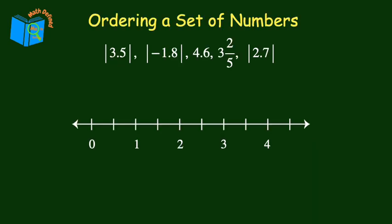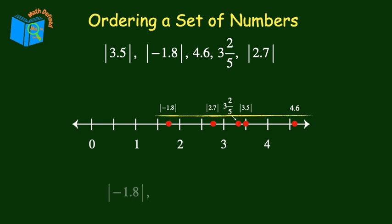Now let's put it all together and order this set of numbers from least to greatest. We have just one fraction, and we could convert it into a decimal and then order them, but I'm going to use a number line because it's easier to visualize the order. We'll graph the absolute value of 3.5, then the absolute value of negative 1.8, 4.6, 3 and 2 fifths, and the absolute value of 2.7. The last step is to look at the number line and write down the values in order from left to right, or least to greatest.